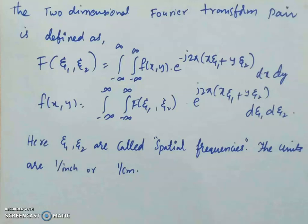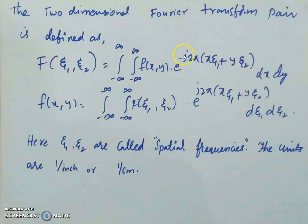If the variation is sudden with respect to distance, we call that a high frequency. Looking at this image: in this area there is little variation in the intensity value, so this is a low frequency. If I move to this region, there is a sudden change — there is some text here which causes a sudden change in intensity value. Because of this sudden change, you can see there is a high frequency in that region.